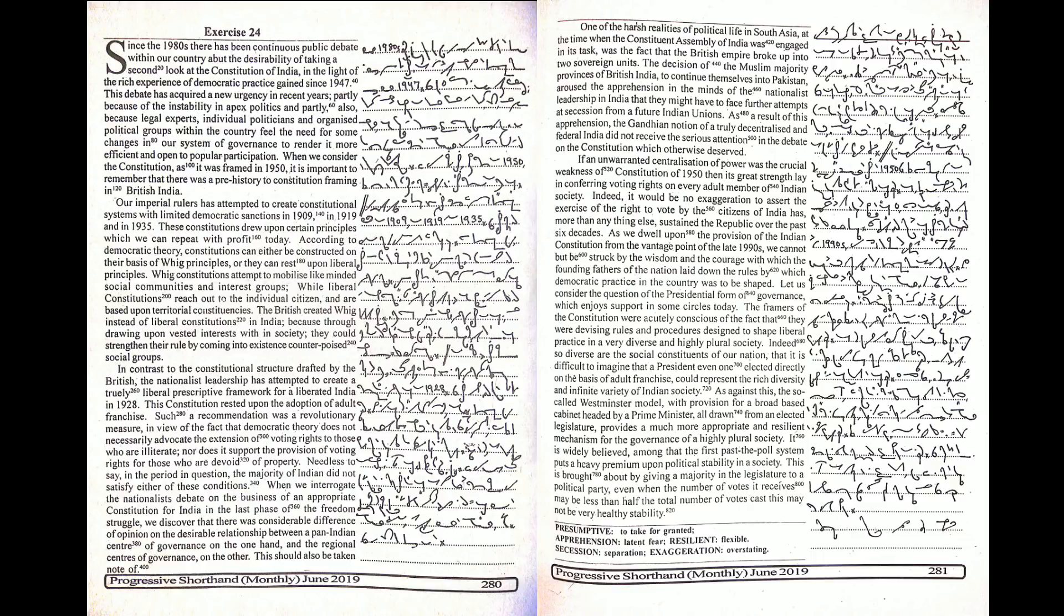The British created Whig instead of liberal constitutions in India because by drawing upon vested interests within society, they could strengthen their rule by bringing into existence counter-poised social groups. In contrast to the constitutional structure drafted by the British, the nationalist leadership attempted to create a truly liberal framework for a liberated India in 1928. This constitution rested upon the adoption of adult franchise.